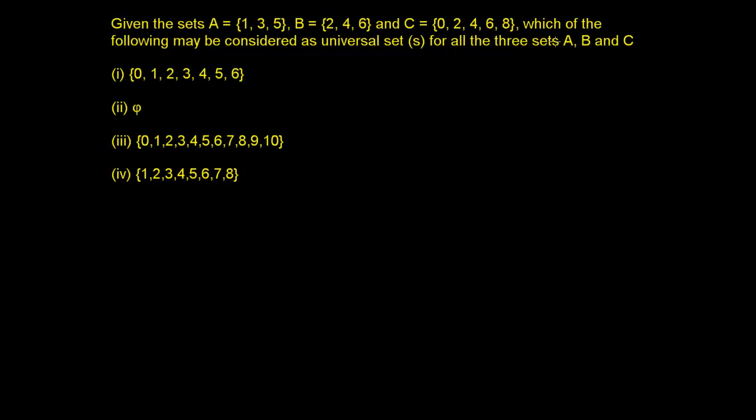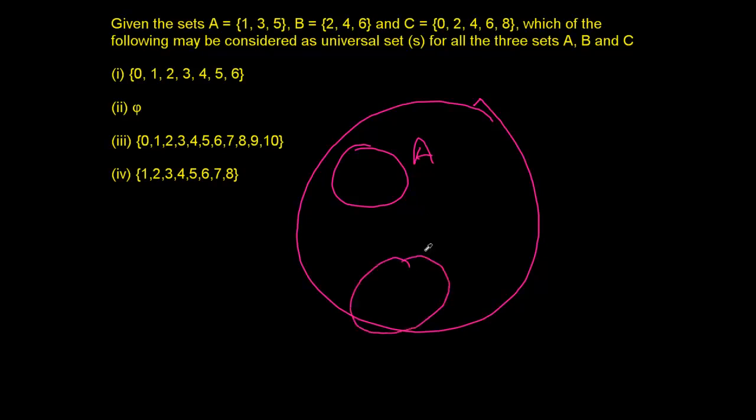So what is a universal set? Universal set means the universe of the set. So there are set A, B, and C. These all sets, you know, the universal set should be so big that it comprises set A. Whatever you will get,